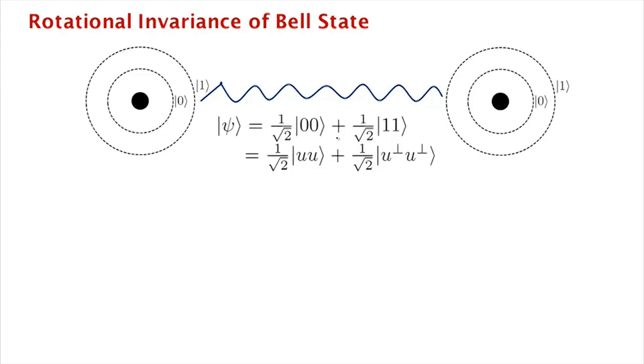Now we are going to see that this is part of a much more general property of Bell states, which is that we can write them in any rotated basis as uu plus u perp u perp.